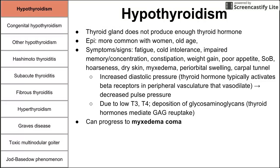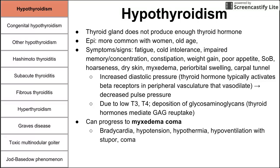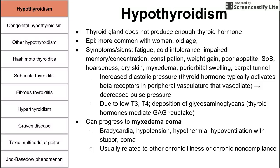If hypothyroidism is not treated, it can progress to myxedema coma — characterized by bradycardia, hypotension, hypothermia, hypoventilation, stupor, and coma, which can lead to death. This usually occurs in patients with chronic illness who have been diagnosed with hypothyroidism but have been non-compliant with their medications.